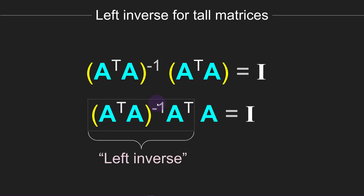It's called the left inverse because it is a matrix — actually three matrices multiplied together — but you can think of it as one matrix. This matrix multiplies matrix A on the left and gives us the identity matrix, which is the definition of an inverse. I encourage you to pause the video and write this equation with the left inverse on the right side of A. You'll convince yourself that expression will not produce the identity matrix — it's not even a valid equation when you consider all the matrix sizes.